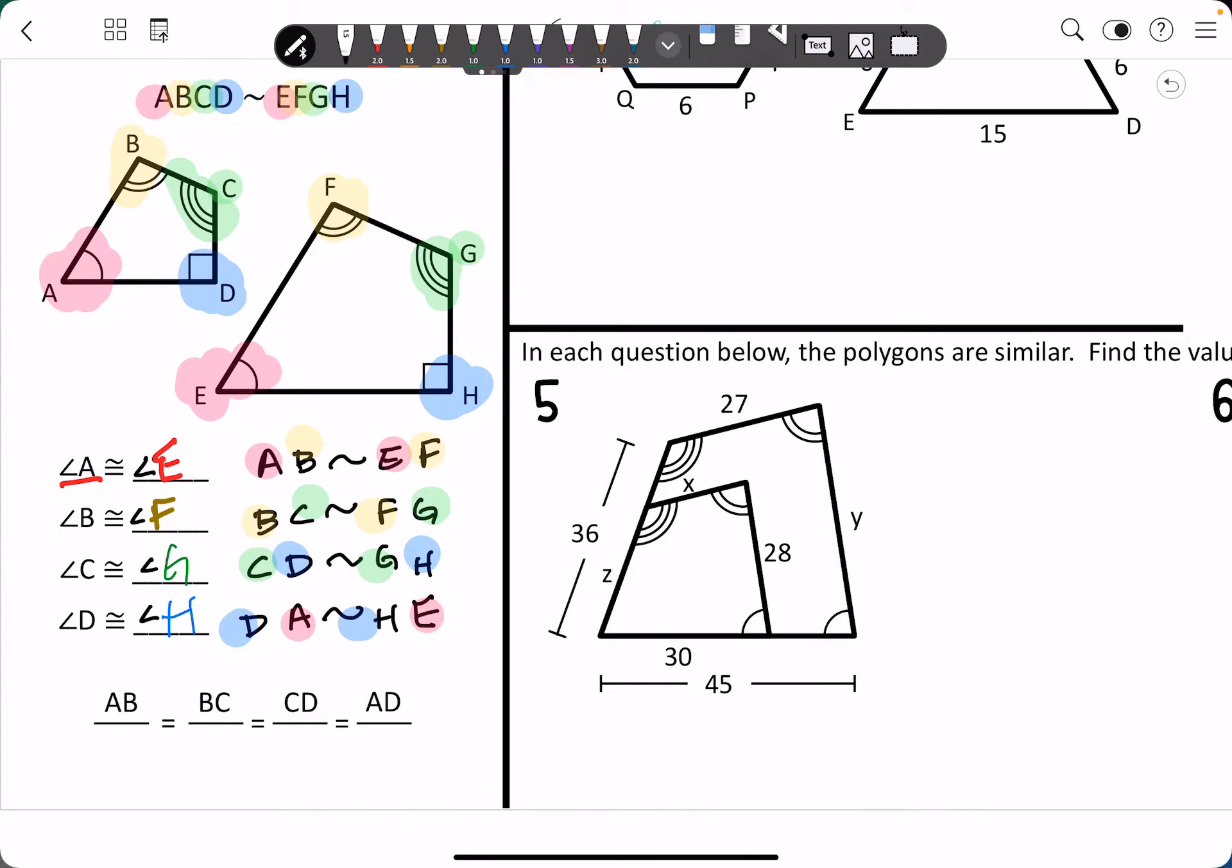So AB over EF is going to equal BC over FG, CD over GH, and DA, or AD over EH, just so we have it matching still.